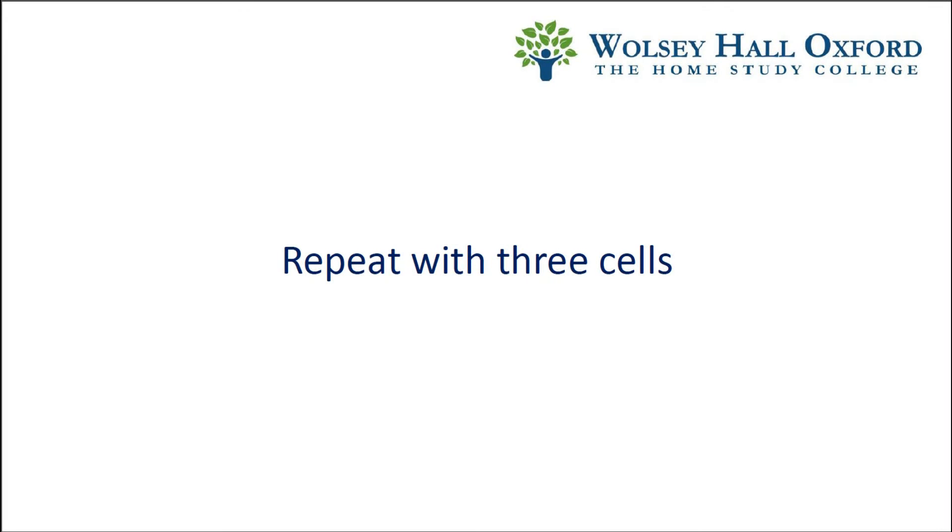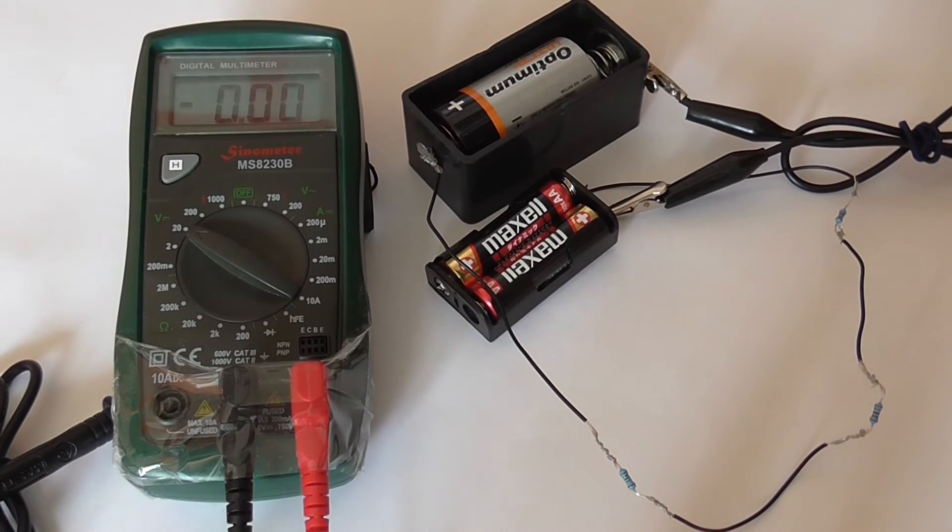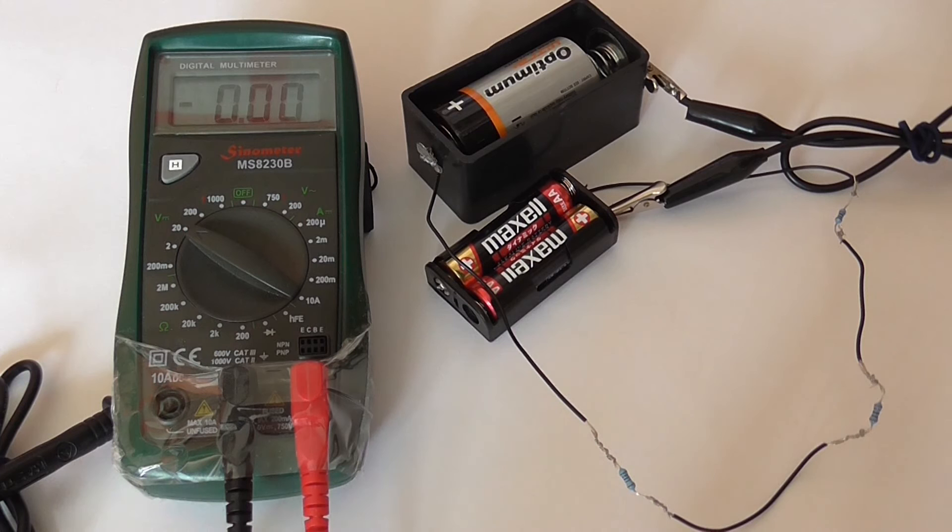Now we're going to see what happens when we take one cell away. Well, actually I've done a bit of a swap, because taking one cell away would break the circuit in the battery pack. So instead, I've put this 1.5 volt cell in series with these two 1.5 volt cells.